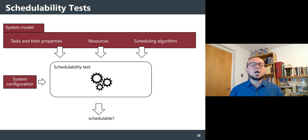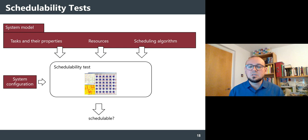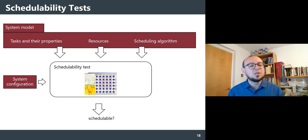We can think of a system simulator as a schedulability test. A simulator can show when a task overruns a deadline, making it at most a necessary schedulability test. If a simulation shows no deadline miss in a particular run, we cannot guarantee no task will ever miss a deadline in the worst case. But if a simulation shows a deadline miss, we know that configuration is not schedulable.